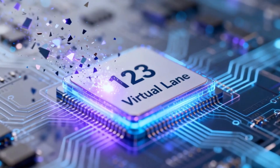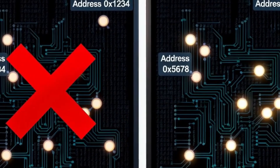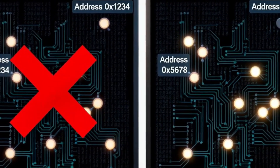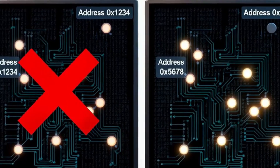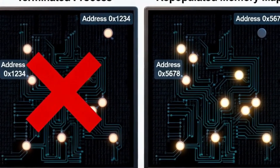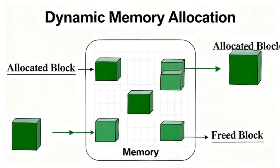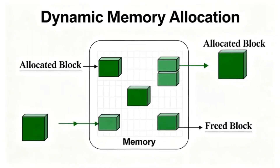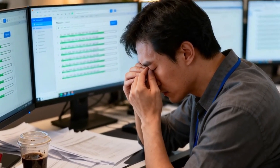But there's another complication. This memory address is temporary. When you close and restart the game, the operating system allocates new memory and your health or gold will be in a completely different place. This is called dynamic memory allocation.